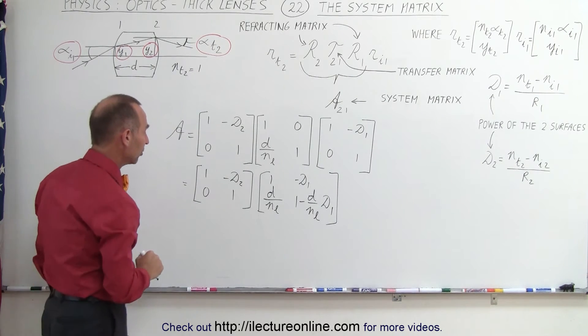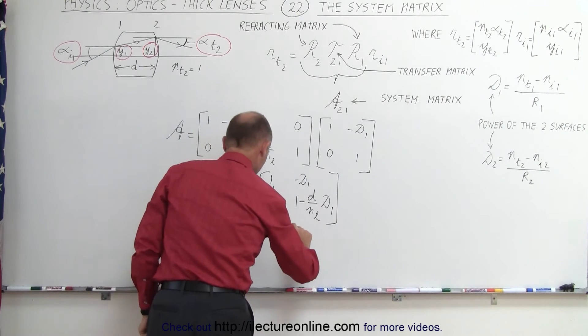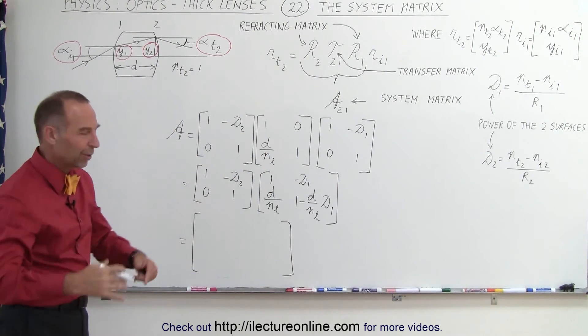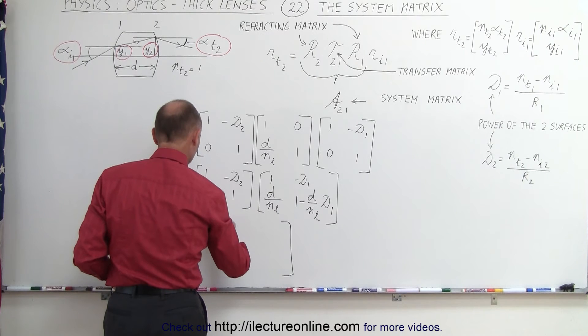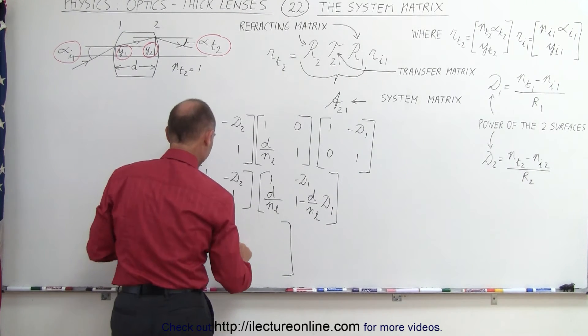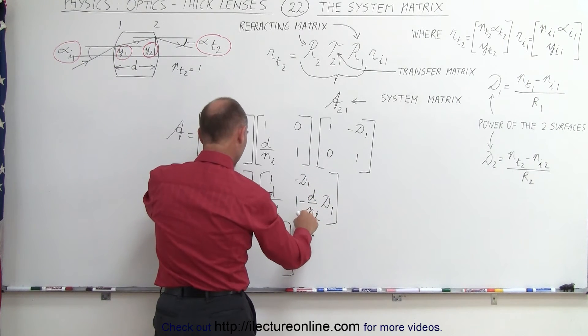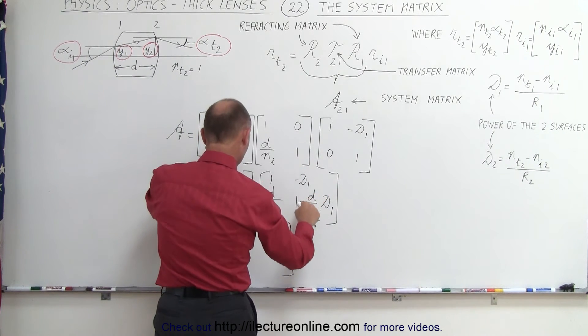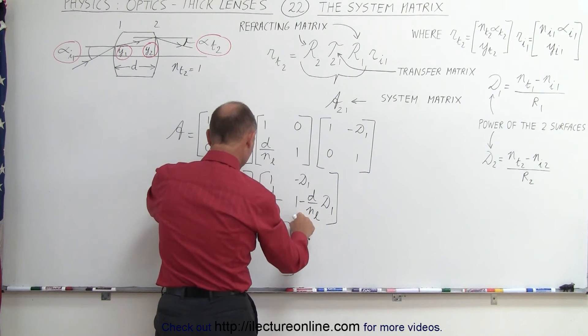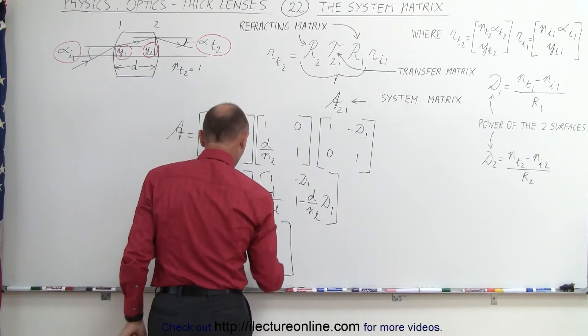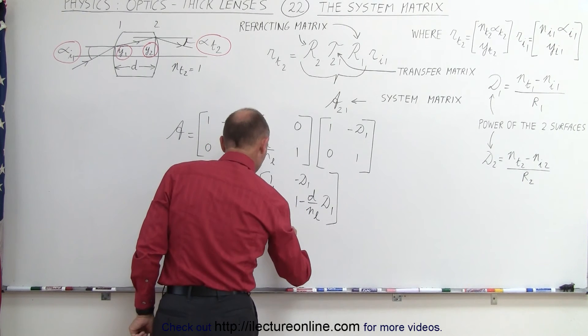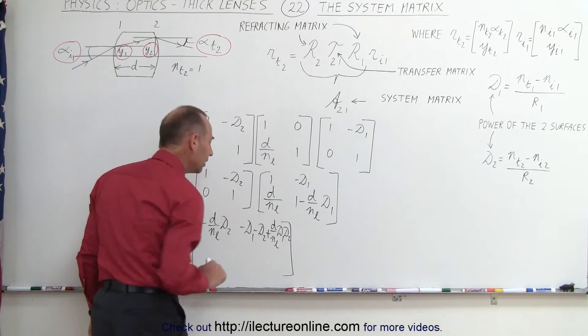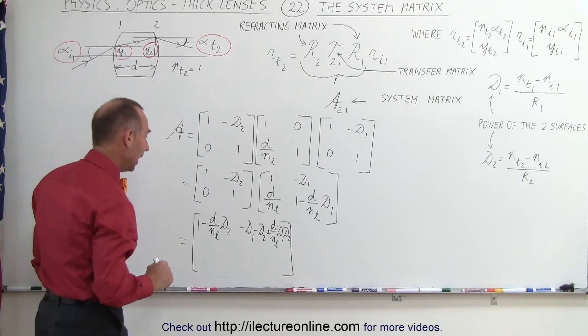So, we're almost there. Now, we need to do one more multiplication. So, this will become a slightly bigger matrix. There's a lot more stuff in it. So, we have 1 times 1 plus this. That's a minus. So, we have 1 minus D over N sub L times D2. 1 times this plus this. So, we have this plus this. We've got to be careful. That's minus D1 minus D2. And those two cancel out. That becomes a plus. So, we end up with minus D1 minus D2 plus this times that. That would be small d over the index of refraction times D1 times D2. Remember, D1 and D2 are the powers of the two surfaces.